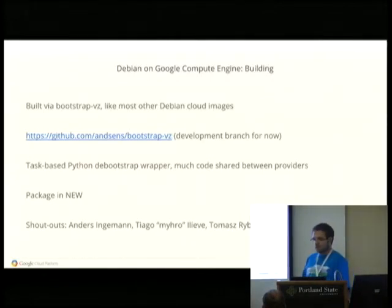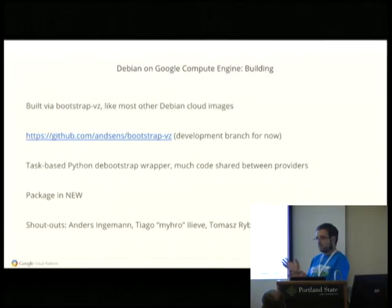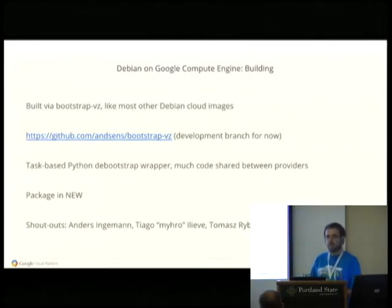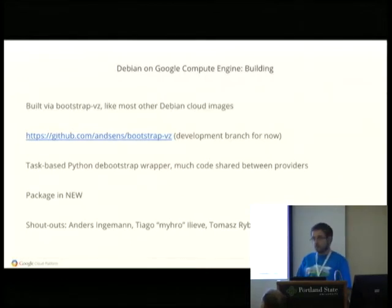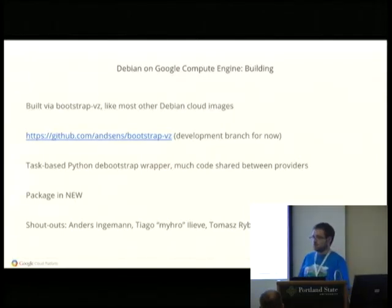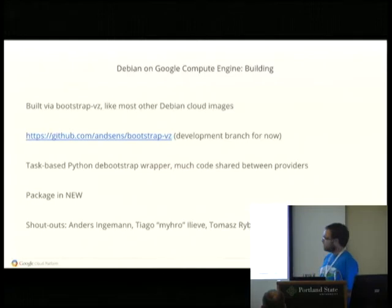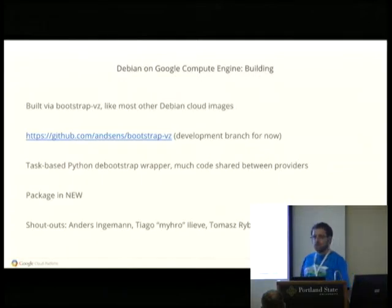Now it is actually a pretty nice directed acyclic graph build tool. It has a bunch of tasks that you list, you can have plugins, and a lot of code is shared between providers, so stuff that we do can benefit other provider images and vice versa. A package of this is now in Debian NEW as of within the last few weeks. It doesn't quite have all of our changes in it because some recent changes are on the development branch, but it's going to be in Debian soon enough. Shoutouts are very much deserved for Anders Ingemin, who started both Build Debian Cloud and Bootstrap VZ.